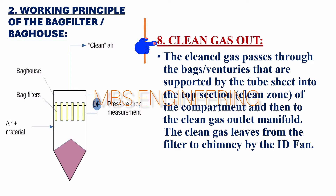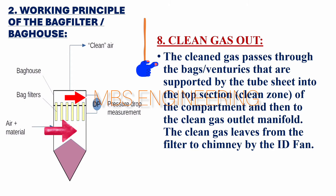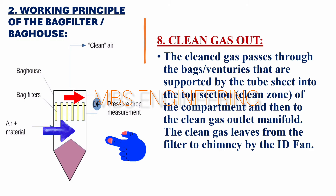Step 8 — Clean Gas Out: The clean gas passes through the bags and ventures supported by the tube sheet into the top tube sheet section — the clean zone — of the compartment, and then to the clean gas outlet manifold. Clean gas leaves from the filter to the chimney or stack via the ID fan.